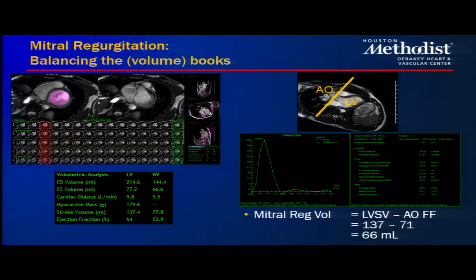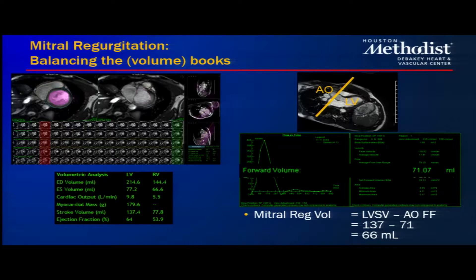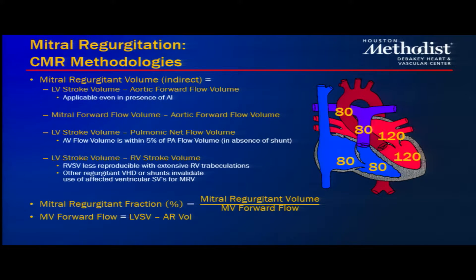For mitral regurgitation, by combining volumes and flows, we can calculate the regurgitant volume through the mitral valve: whatever is in the LV stroke volume not accounted for by aortic forward flow must be going through the mitral regurgitant orifice. Shown here, the LV stroke volume is 137 cc's and the aortic flow is 71 cc's, giving us 66 mL — roughly a 48% regurgitant fraction.